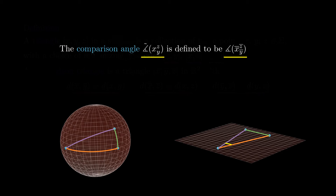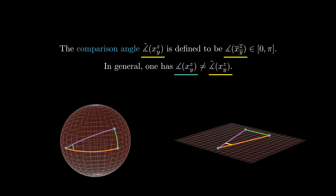The comparison angle of the triangle x, y, z at x is defined to be the angle at x-bar of the model triangle x-bar, y-bar, z-bar. In principle, there is no reason for this angle to be equal to the angle between the geodesics xy and xz in the surface. You can draw some examples and verify this yourself.